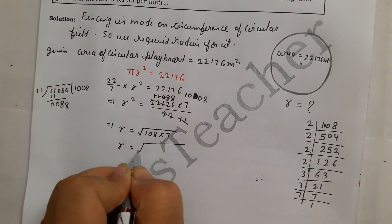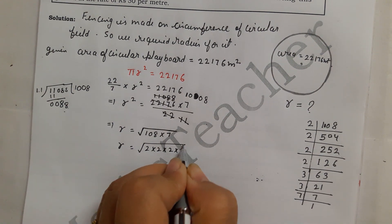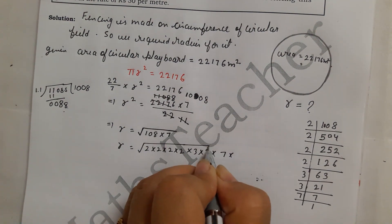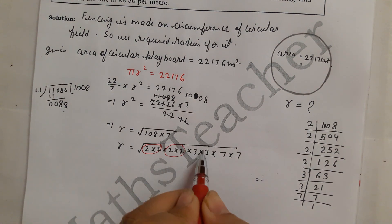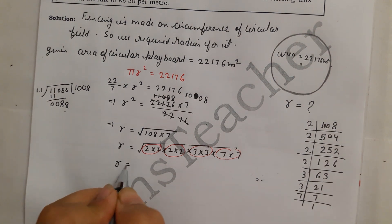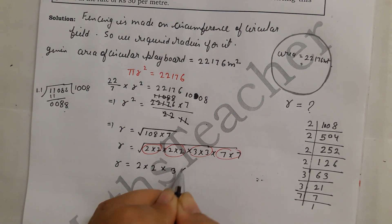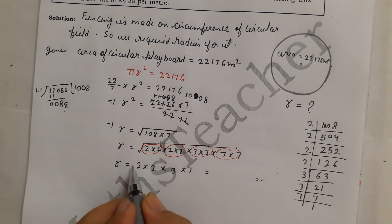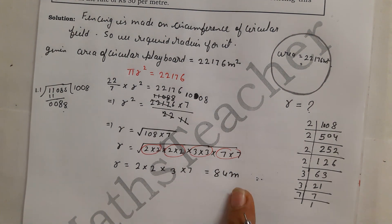Seven goes one time. So we factor 108 as: r equals square root of 108 is 2 x 2 x 3 x 3 x 3, and 7 is one time. Now pairing - there are two pairings of 2, one pairing of 3. This pair gives 2, this pair gives 3, and 7 is unpaired, so when you multiply: 2 x 2 x 3 x 7 equals 84 meters. So r equals 84 meters.